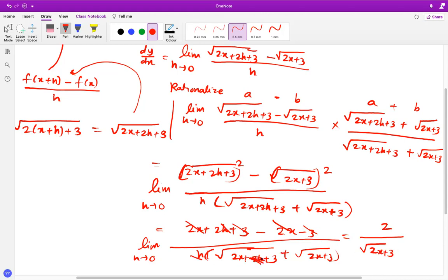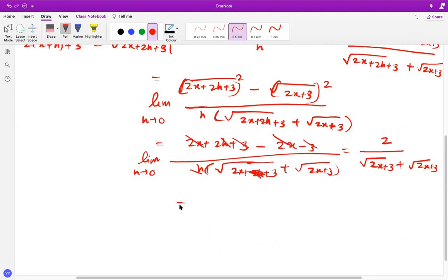So what do get eventually is 2 over square root of 2x plus 3, because h is 0, so this is 0, and here we get is root 2x plus 3. So actually, when you simplify this, your final answer that you get is, 1 over, 2 over 2 times root 2x plus 3, but since this 2 and 2 get cancelled,